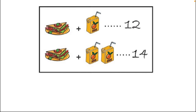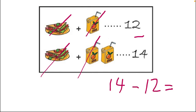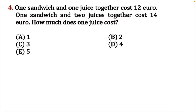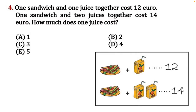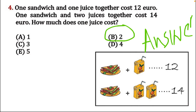To recap: I cut the burgers from both the upper and lower equations — one burger on each side. Then one juice packet is cut from each side, leaving one juice packet remaining whose cost we need to find. 14 minus 12 equals two, so our answer for this question is option B — two. One juice packet costs two.